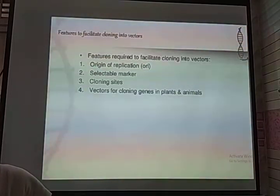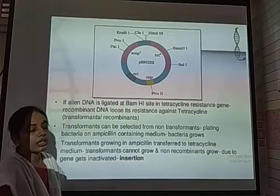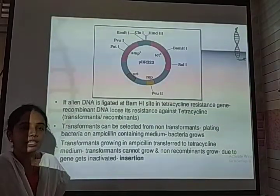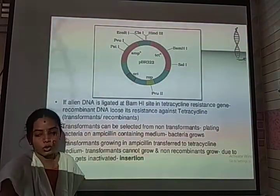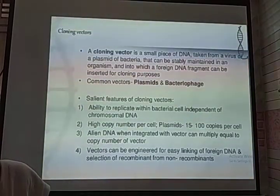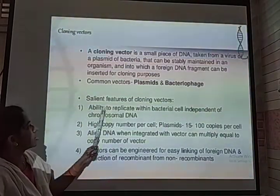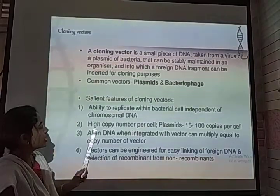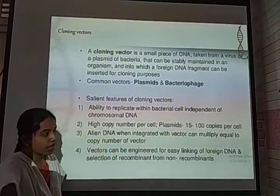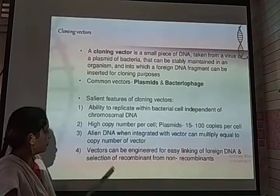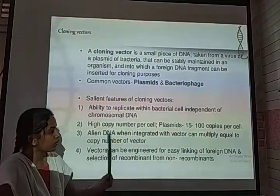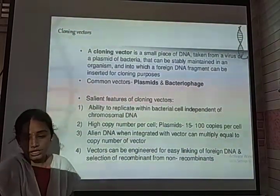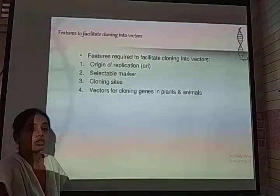pBR322 stands as follows: 'p' indicates plasmid; 'BR' indicates that the plasmid was discovered by scientists Bolivar and Rodriguez. The plasmid has the ability to replicate in bacterial cells only, with a capacity of multiplication of more than 15 to 100 copies per cell. Even alien DNA can interact with the vector. Vectors are genetically engineered to easily link foreign DNA to form recombinants and to distinguish non-recombinants.